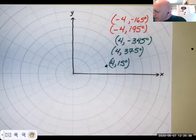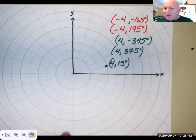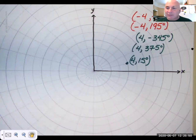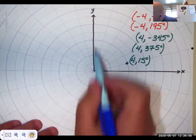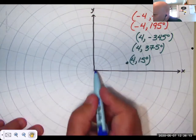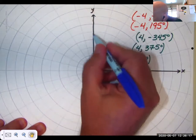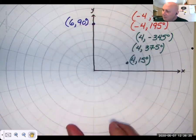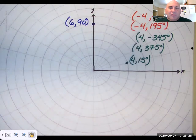All righty. So assuming that you have some graph paper and you're ready to go, let's try graphing a few points. Where is the point 6, 90 degrees? If you don't have graph paper, point to it on your screen. So here's the 90 degree. I know we always put r first and then theta, but when I graph, I usually graph, I go to theta first and then r. So I go to 90 degrees and then 1, 2, 3, 4, 5, 6. This is 6, 90 degrees.